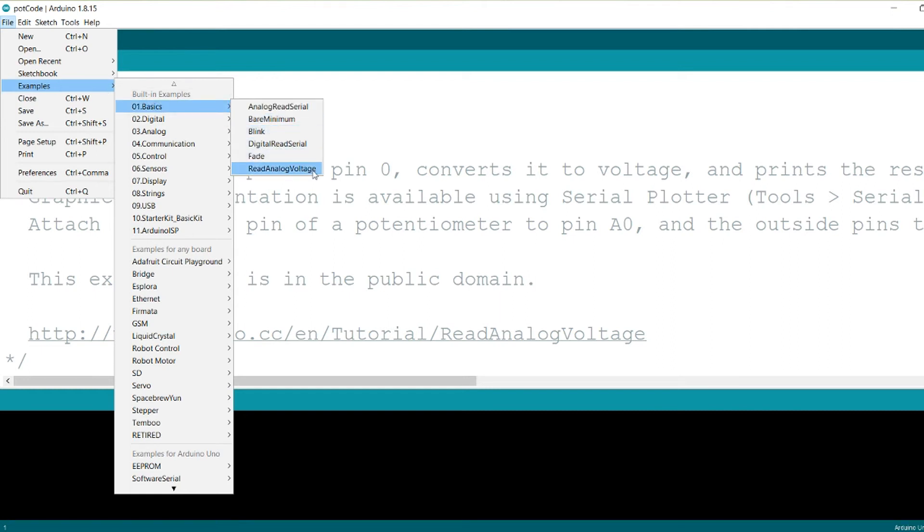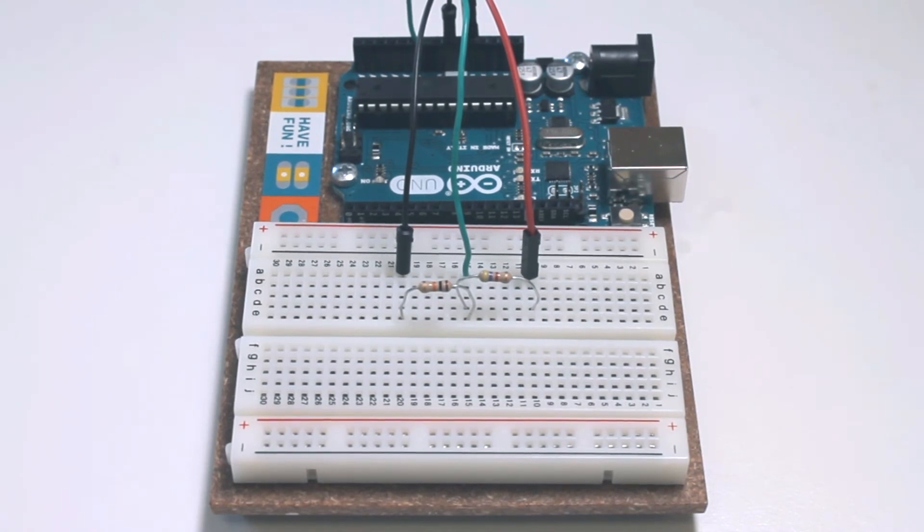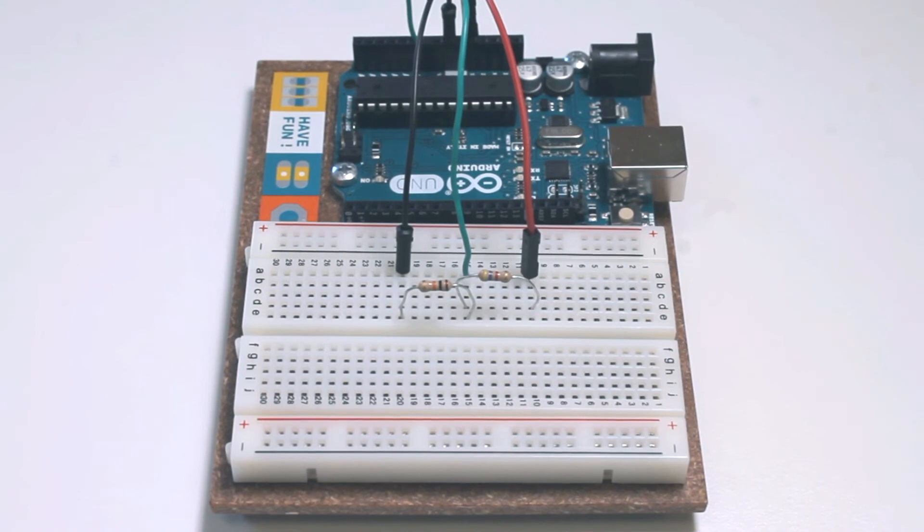basics, read analog voltage. The example program reads an analog value, converts it to the corresponding voltage, and prints the voltage to the serial output.